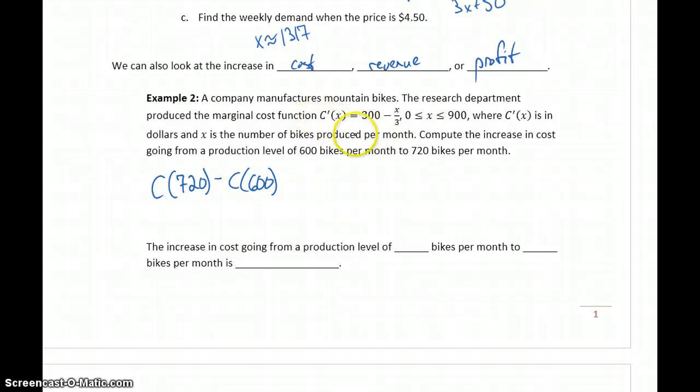So we could evaluate this by integrating this marginal cost function over the interval from 600 to 720. Because what this will do when we integrate this function, we'll get the cost function plus that arbitrary constant c, which always cancels out with definite integrals. We'll evaluate it at 600 and 720, take the differences of those two, and we'll find that difference in our cost.